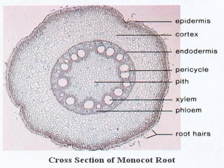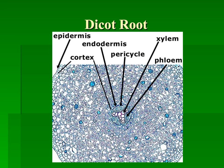Here we have a cross-section of a monocot root. We need to be able to identify the pith and identify this as a monocot root. This is a dicot root. We need to identify the xylem, the phloem, and the amyloplast. The little purple dots that are present are storage starch, and that is the amyloplast.